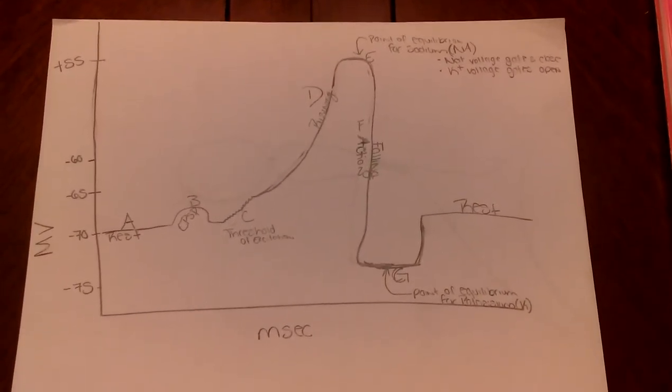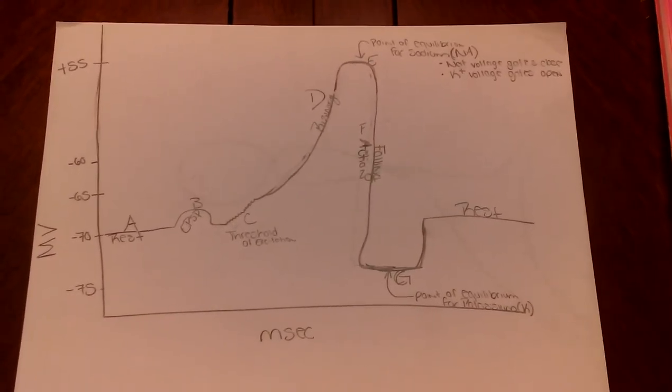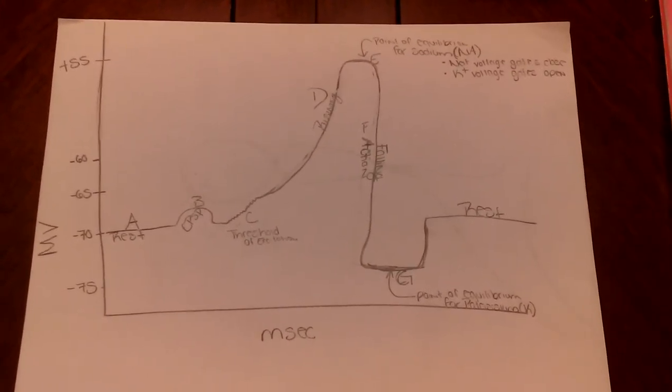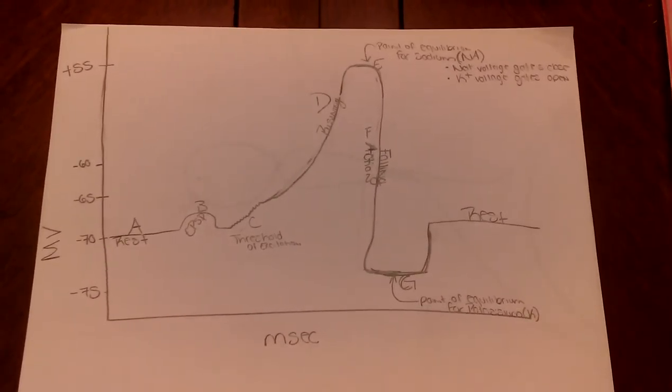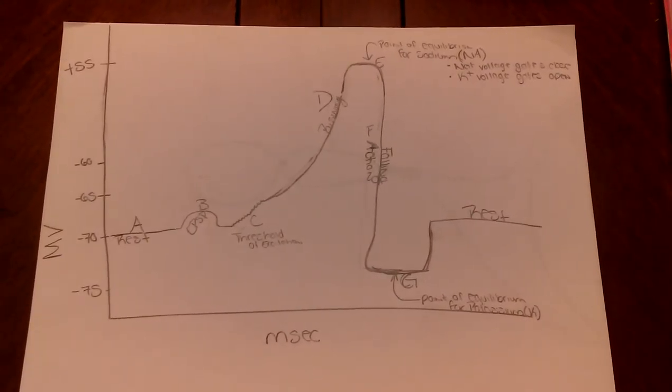To get the cell back to resting membrane potential, or rest, the sodium-potassium pump activates and begins to pump out the sodium ions while drawing in the potassium ions.